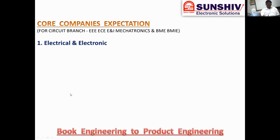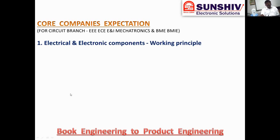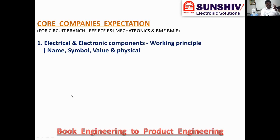What is the first step? Very simple: electrical and electronic components. Working principle is completed. 35 electronic components — we will be able to utilize them. What is the working principle? What is the purpose of a component in a particular place? That is important. Name, symbol, value, physical component identification.